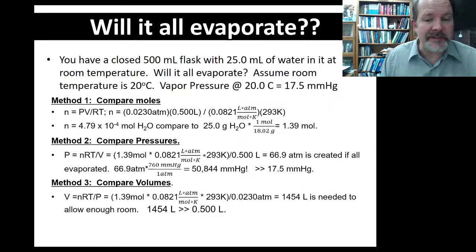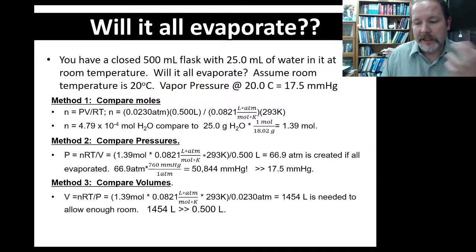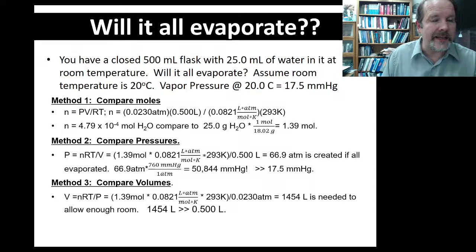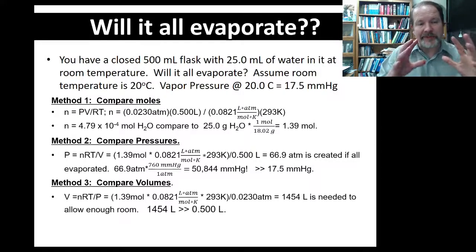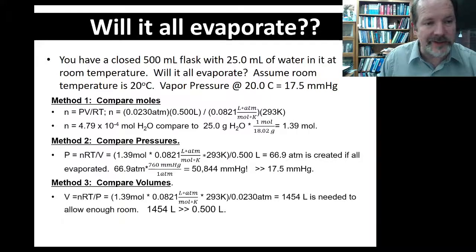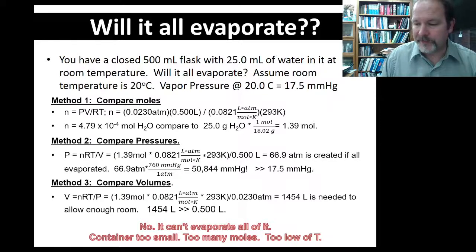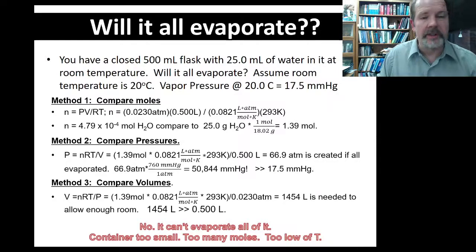Method 3: what volume would it take for it all to evaporate? Using the 1.39 moles again and the ideal gas law, solving for volume — with R, T, and vapor pressure as the pressure — if you keep the pressure at vapor pressure, how big a container would you need? You'd need 1,454 liters. So 500 milliliters is not going to do it at all. The container is either too small, you have too many moles, or the temperature is too low — pick your favorite reason why. It's all true.